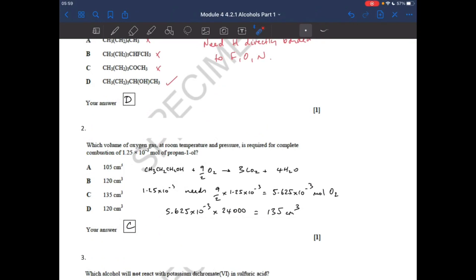Question two, which volume of oxygen gas at RTP is needed for complete combustion of that many moles of propan-1-ol? So there's the balanced equation. For one mole of that you need 9 over 2 or 4.5 moles of oxygen, so 1.25 times 10 to the minus 3 moles needs that many moles of O2. Multiply by 24 then 1000 to get it into cm cubed, 135, so C.